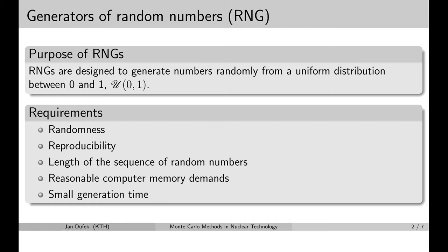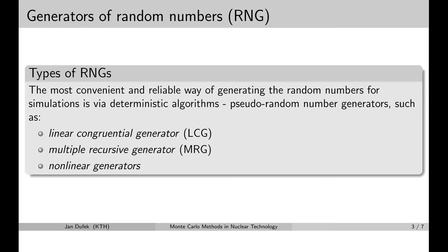Another requirement is reasonable computer memory demand — the generator shouldn't take up too much RAM. That's usually not a problem; these generators are very efficient in terms of memory use. Finally, we want the computing time needed for generating random numbers to be as small as possible, because we need to generate a very large number of random numbers during every Monte Carlo simulation — millions or billions — and a very large part of the computing time is taken up by the random number generators.